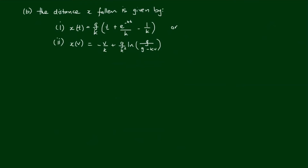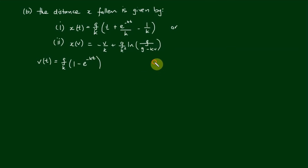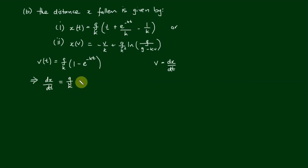Part b asks us to prove that the distance x fallen is given in two forms. Path 1 gives x as a function of t: x(t) equals (g/k)(t plus e to the negative kt over k minus 1/k). Since we found v(t) equals (g/k)(1 minus e to the negative kt), and velocity v is the first derivative of displacement, we rewrite this as dx/dt equals (g/k)(1 minus e to the negative kt). This is equation 3, also a separable first order differential equation.